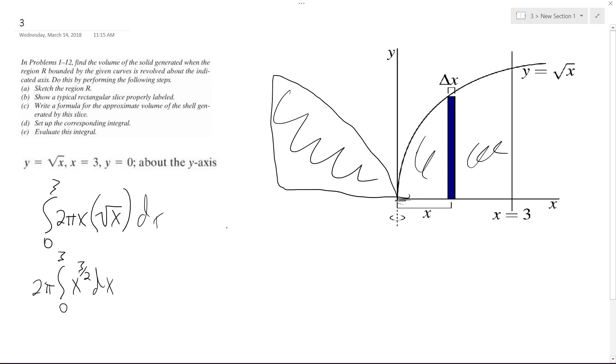And what we end up with, if we integrate this, we get x to the 3 halves plus 1, over 3 halves plus 1, which is 5 over 2. So we end up with 2π, 2 over 5, x raised to the 5 halves.